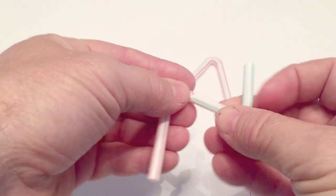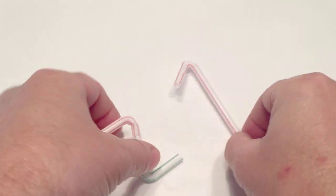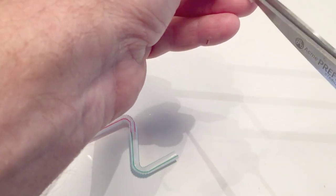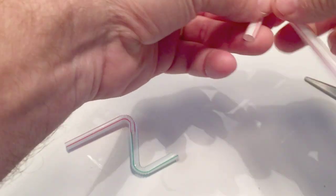And then once that's in, take the other side of the straw with a little bit longer end, and cut that so you can squeeze that part of it, and then put that into the other straw making the M.